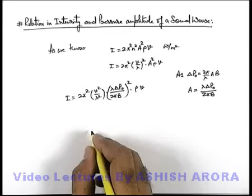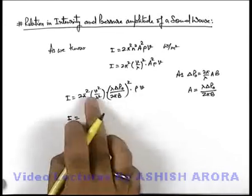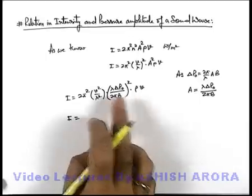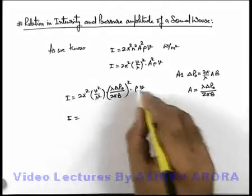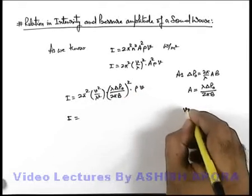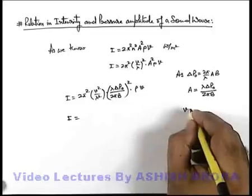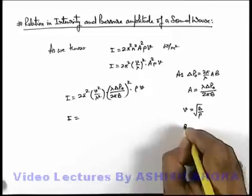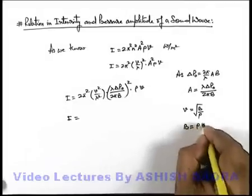Now if we rearrange these terms and analyze further, we can write down the bulk modulus. As we know, the velocity of sound waves in a medium is given as √(B/ρ), so here we can write bulk modulus as B = ρv².